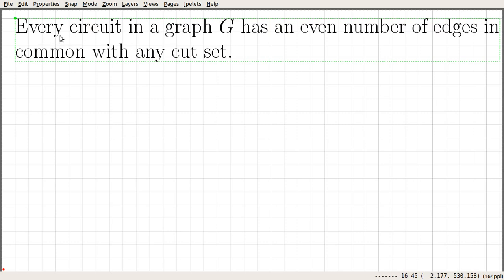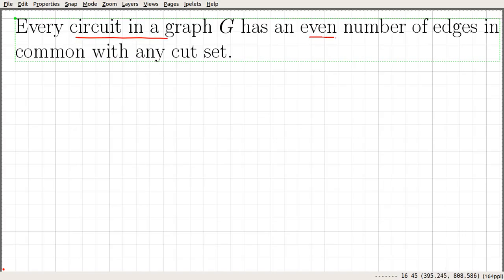In this video, we continue our discussion on properties of cut sets. We are going to prove this statement: every circuit in a graph has an even number of edges in common with any cut set. So, every cycle or circuit in a graph has an even number of edges in common with any cut set.